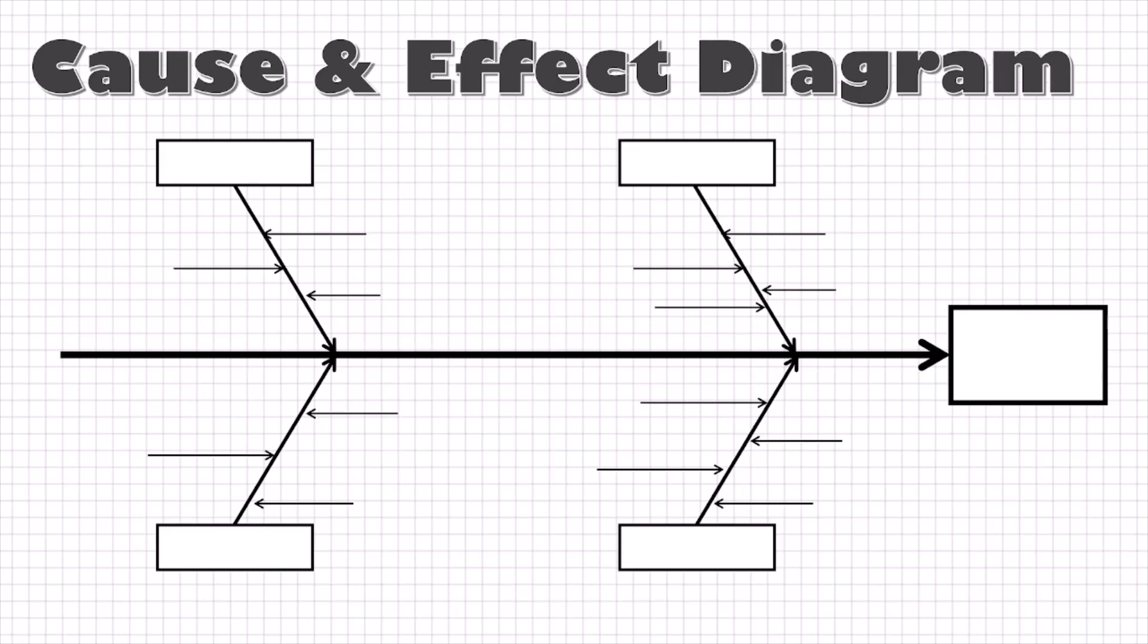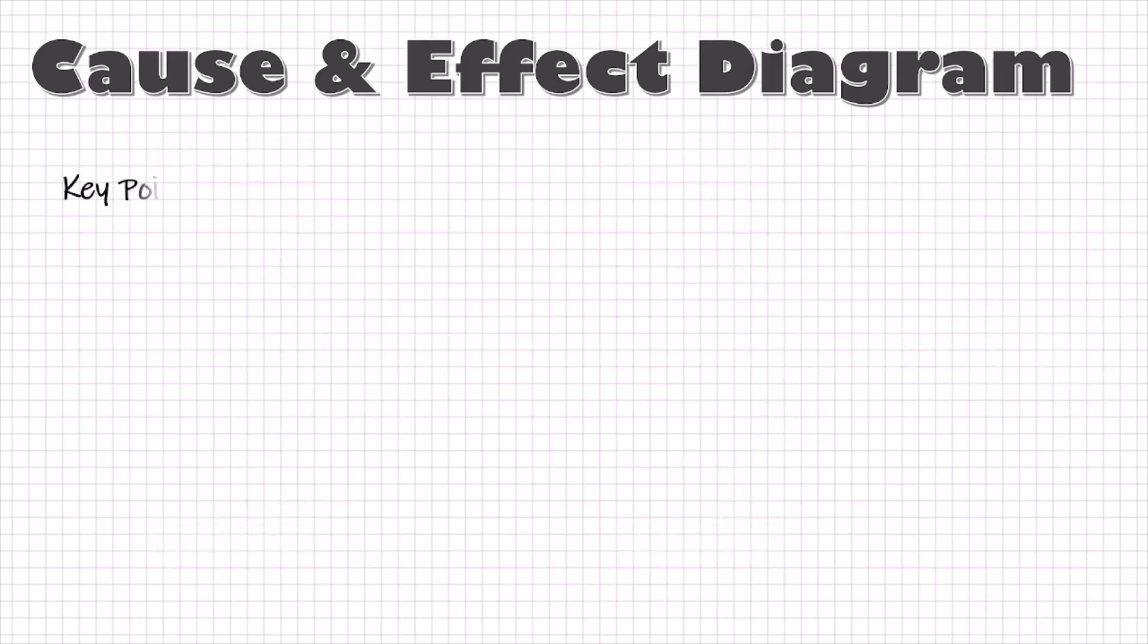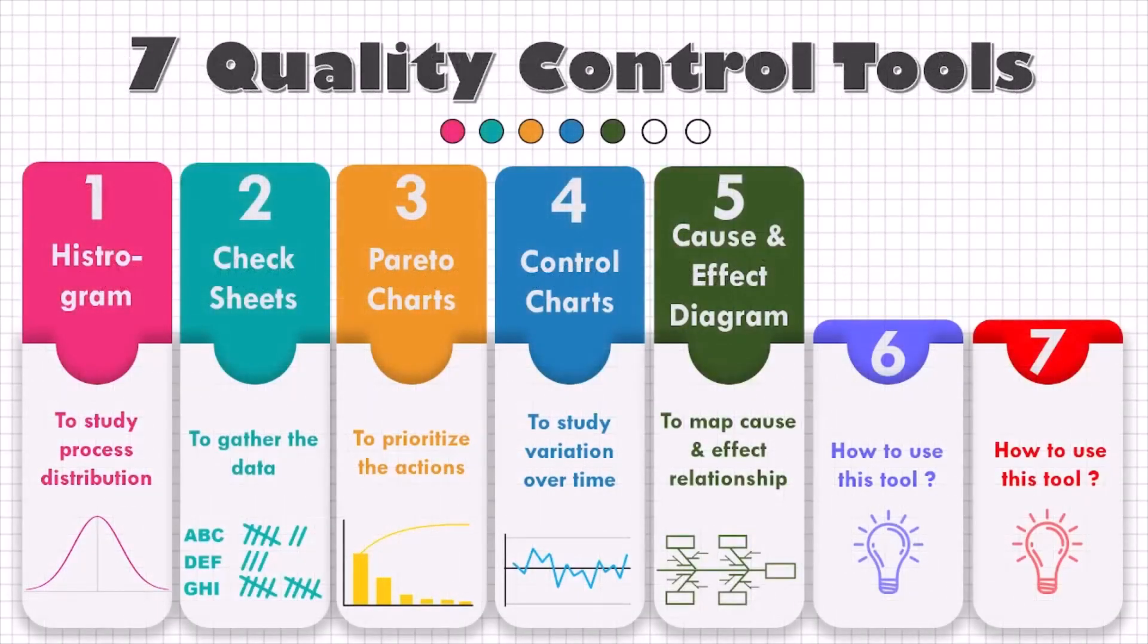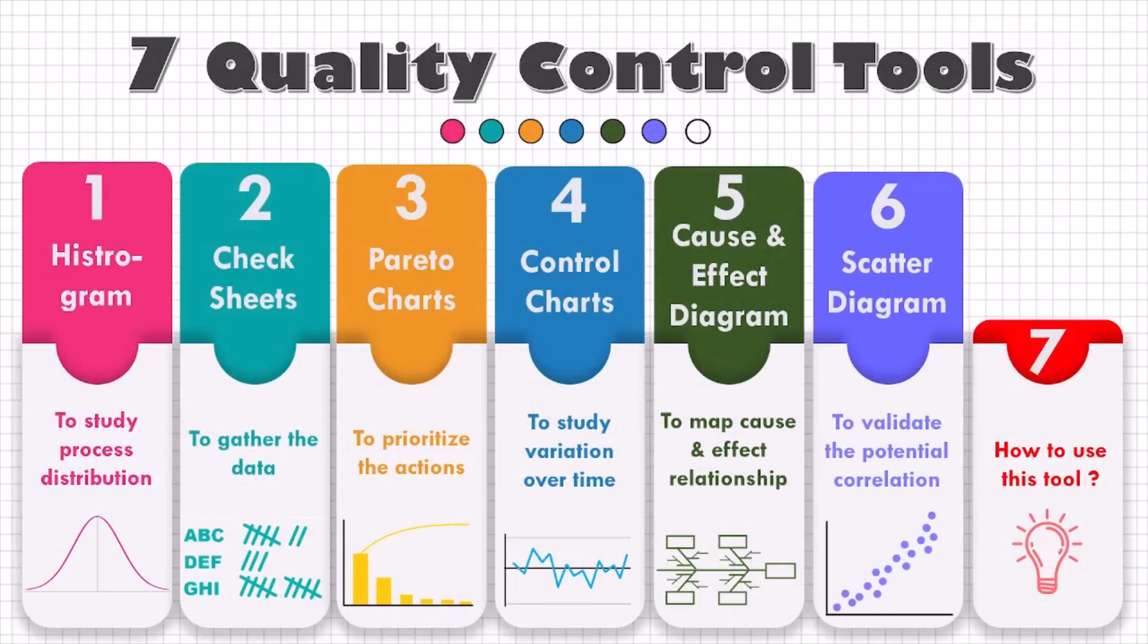While making a cause and effect diagram, it is recommended that we should acknowledge every potential cause proposed by the team and write it on the paper. We call it potential because we may not be sure if any change in this potential cause will have any effect on the problem that we are studying. So in order to validate the presence of any relation, we have another tool, Scatter Diagram.